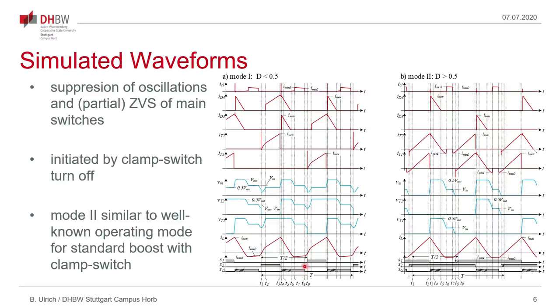And as the clamp switch turns off at this time, this will initiate a zero voltage transition or a partial zero voltage transition. One thing which is remarkable is if we look at the operating mode 2 we see that the waveforms are similar to those of a boost converter operated with a clamp switch.